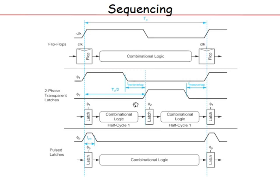The third style is pulse latch design. One benefit of latch-based design is less sequencing overhead and tolerance to clock skew through time borrowing. A pulse latch uses a latch but driven by a short pulsed clock signal, which mimics an edge-triggered flop but for the duration of the pulse also mimics a latch. It tries to combine the benefits of both latch and flop.